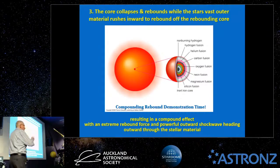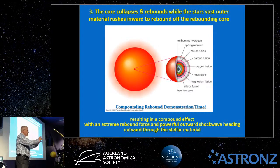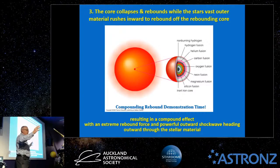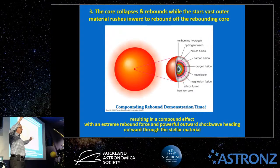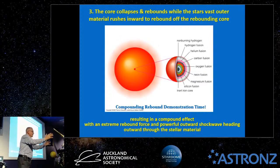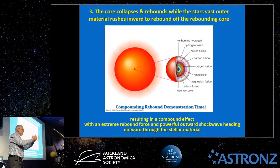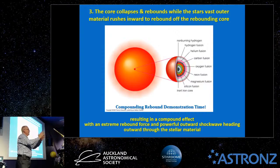Here's the key point about the rebound mechanism. The common picture is that the core collapses to a dense neutron star, all the infalling stellar material hits the static core and rebounds out, causing the explosion. But there's much more to it: the core doesn't just sit there — it also rebounds off itself at exactly the same time the outer stellar material is rushing inwards.